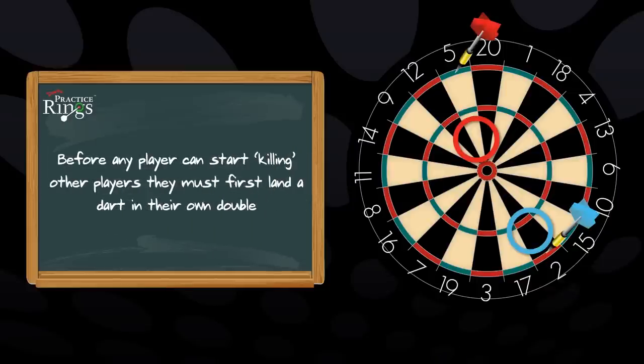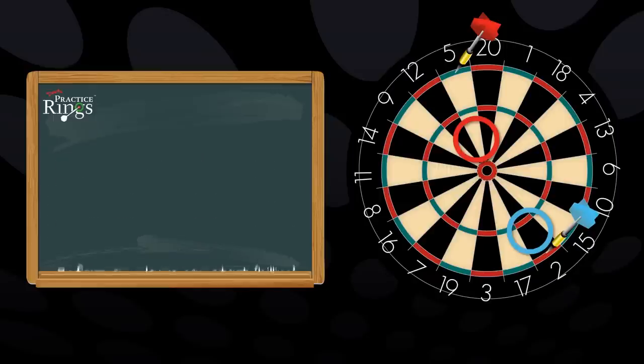To begin play, before any player can start killing off other players, they must first land a dart in their own double. For example, if a player's ring is positioned over both the 20 and 1 section of the board, the number in which the player's first dart landed will be the number of the double which the player needs to hit.